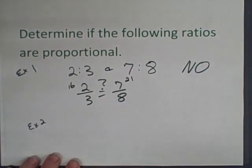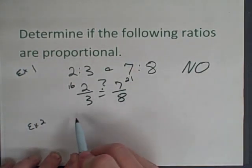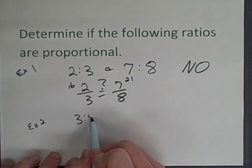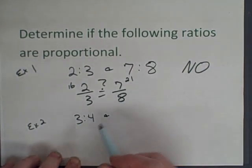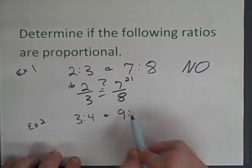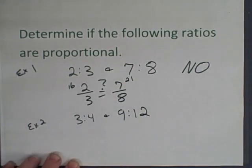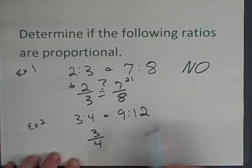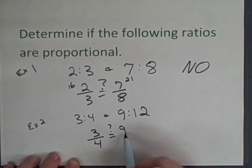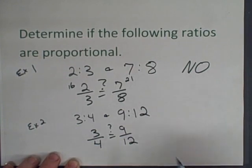Example two. Let's take a ratio of three to four and a ratio of nine to twelve. Again we can write them as fractions three to four set equal to with a question mark of nine to twelve.